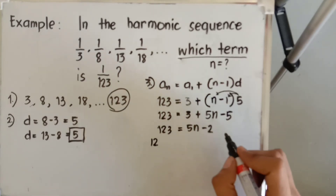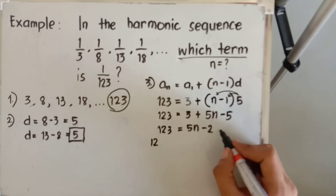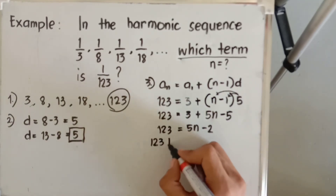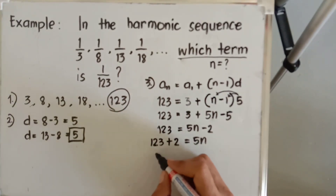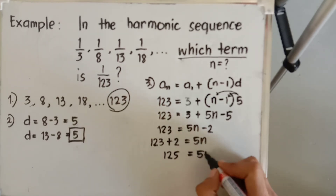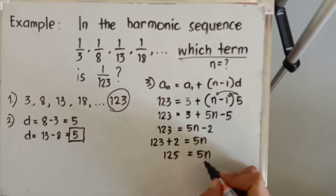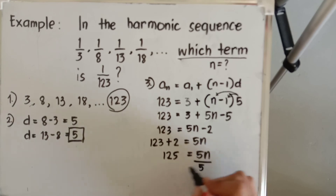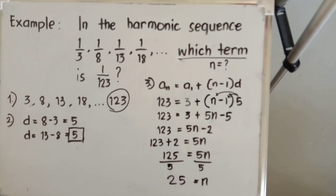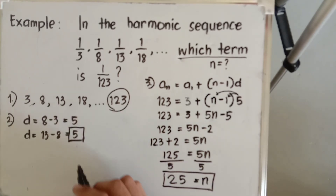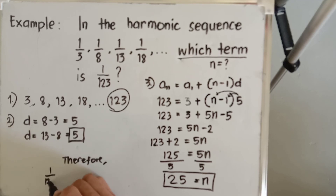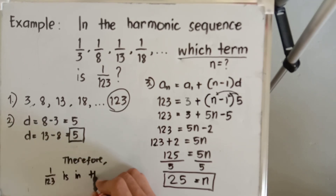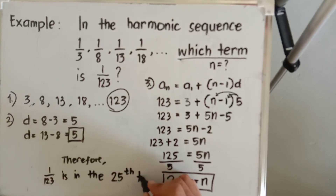Applying the addition property of equality, add two to both sides: 123 plus two equals five n, since negative two plus two makes zero. So 125 equals five n. Dividing both sides by five, we get n equals 25. Therefore, one over one hundred twenty-three is the 25th term of the given sequence.